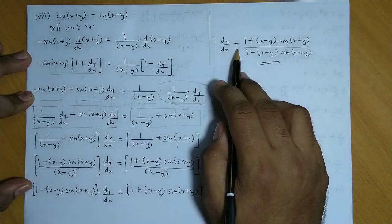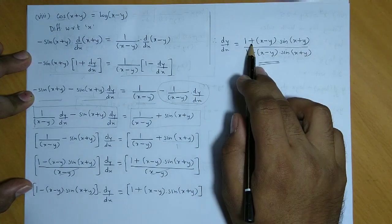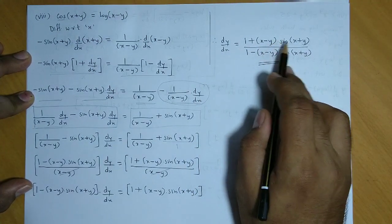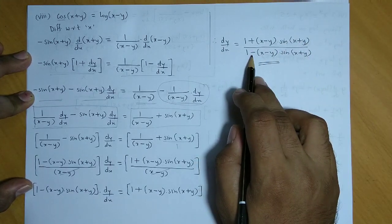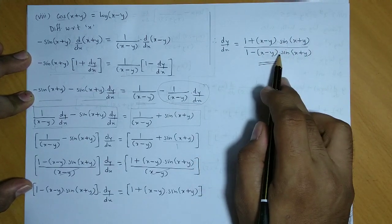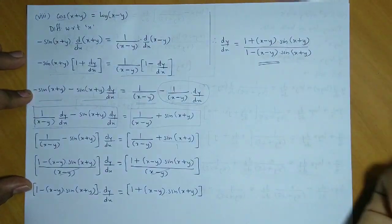So we have dy by dx is equal to 1 plus x minus y into sin of x plus y, upon 1 minus x minus y into sin of x plus y.